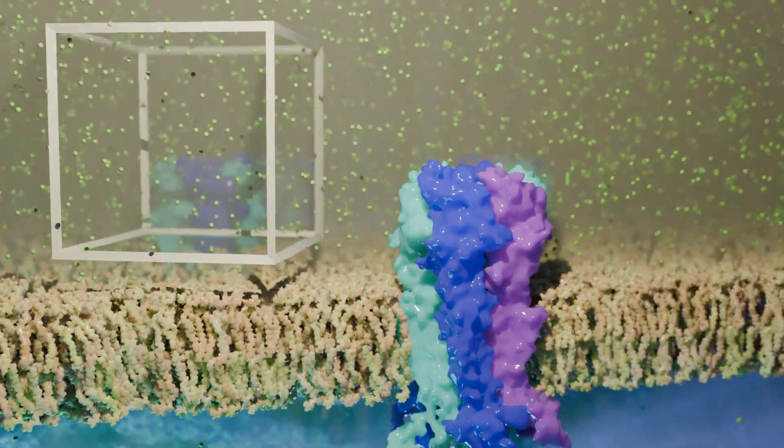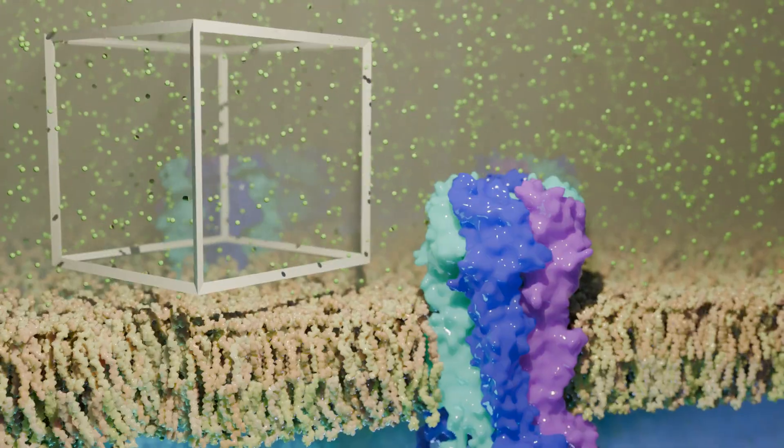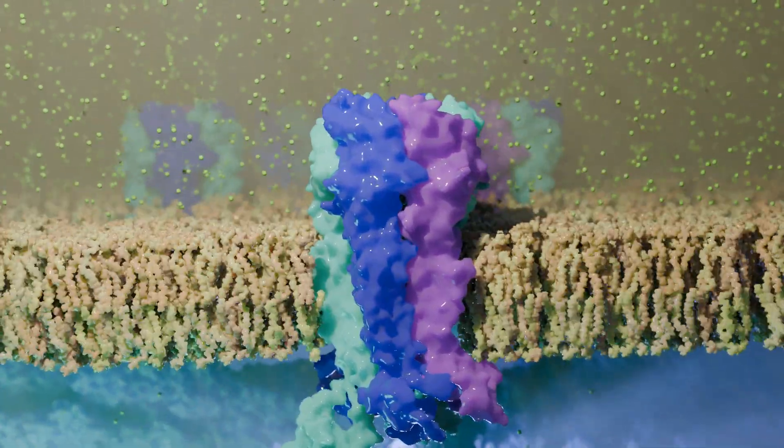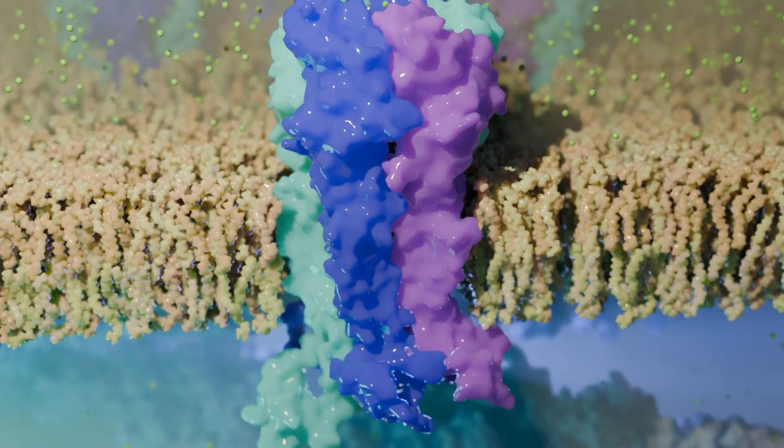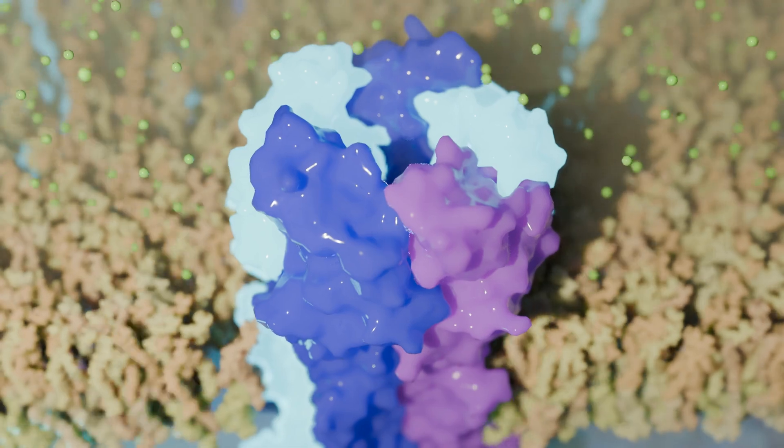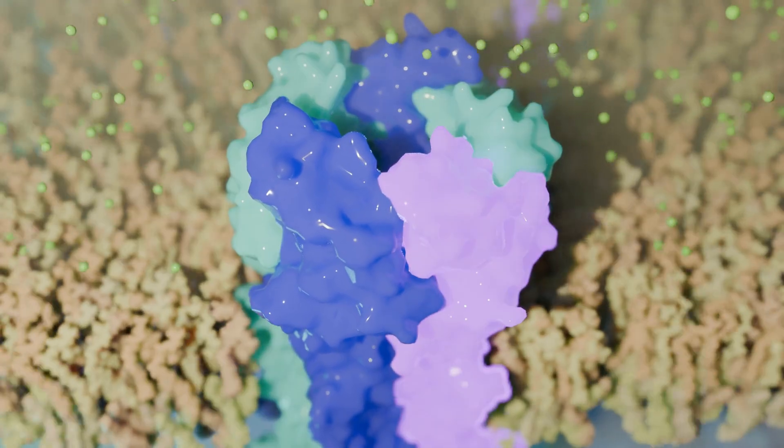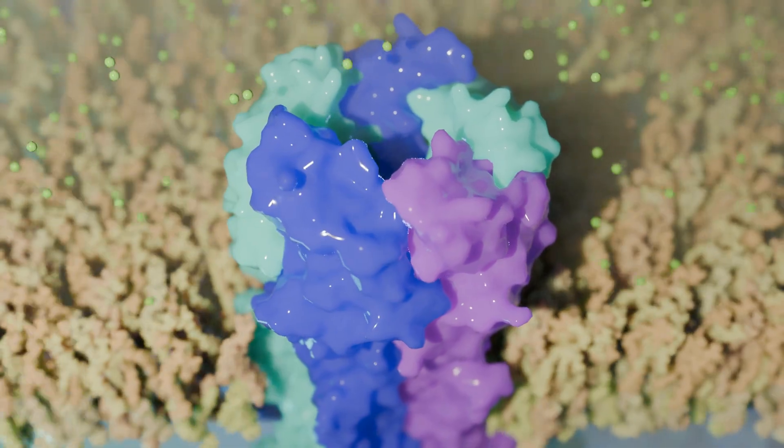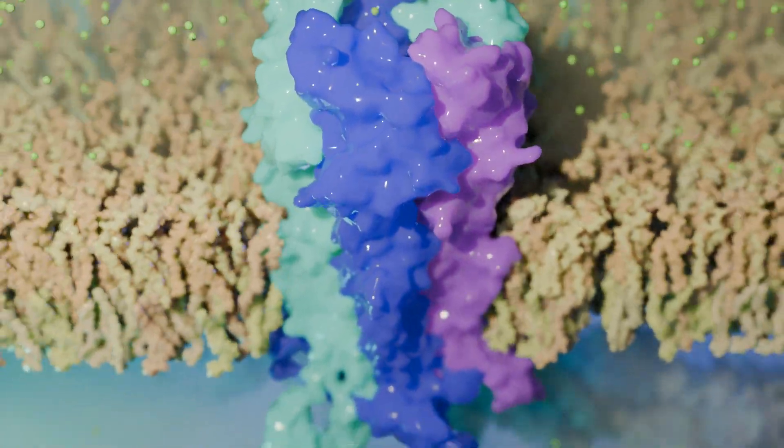That volume of extracellular space would be expected to hold about 70 chloride ions. Now, let's focus back on the GABA-A receptor. This receptor consists of five subunits: two alpha, two beta, and one gamma subunit. This is the most common form, but other subunit configurations are available.